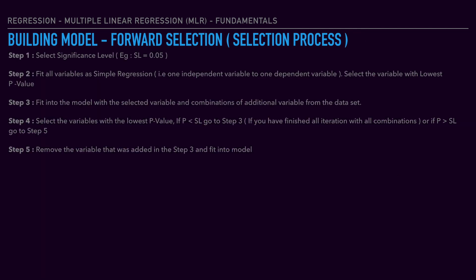Now let's get into forward selection, or the selection process. It is a little more complicated than backward elimination. In step one, select the significance level. In step two, perform simple linear regression — if there are 10 variables, map each individual variable to the dependent variable and run simple linear regression. Then check the p-value. If the p-value is less than the significance level, go to step 3; otherwise go to step 5, which means remove the last variable and run the model.